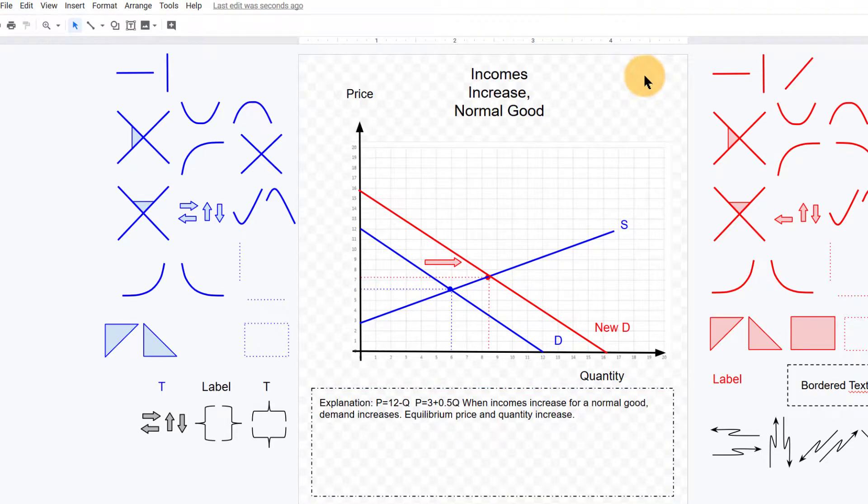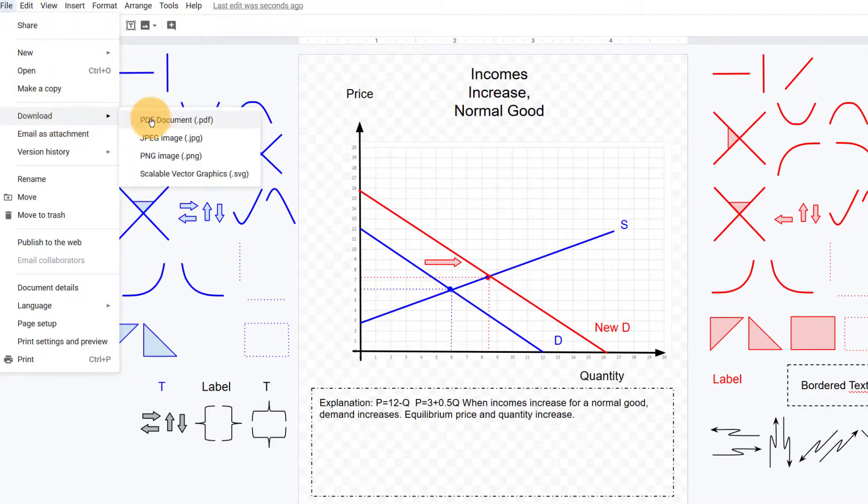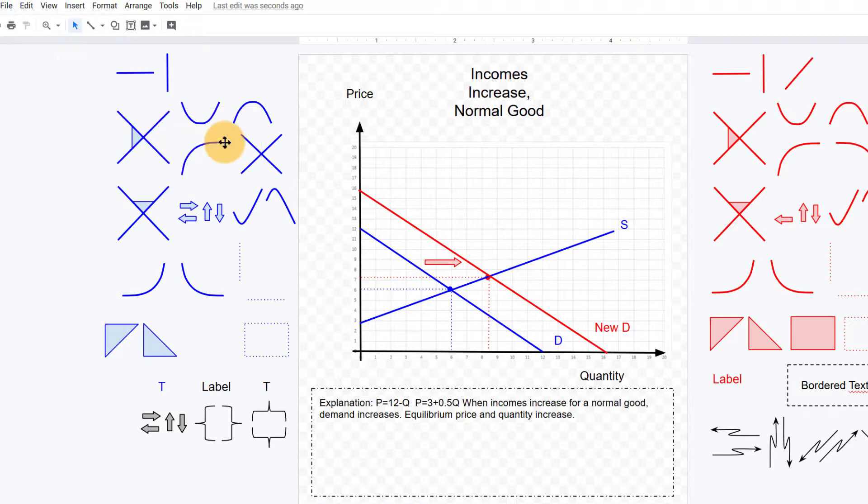Now after you're done making changes to your graph here, you want to probably download it. Google will automatically save the changes that you made in your Google Drive account, but if you want to turn this in, print it out, or include it in another kind of document, go over here to the file menu up top left and download. This gives you the option to download it as a PDF, JPEG, PNG which is just another kind of image file, or SVG which is another kind of image file. Probably JPEG or PNG is fine, but ask your professor what you would need to do to submit it in the format that they would like. Let's save it as a JPEG file.